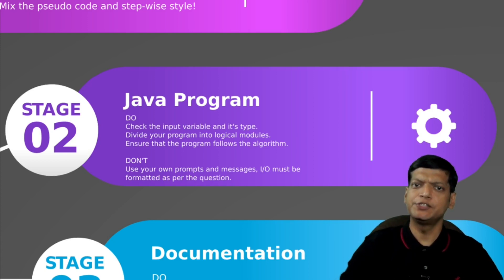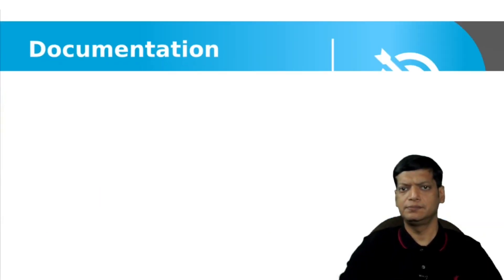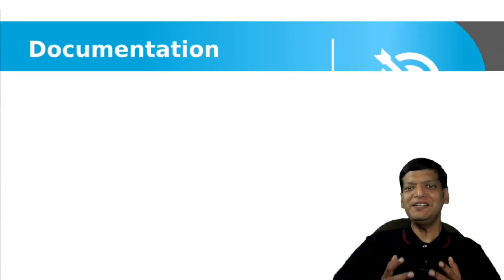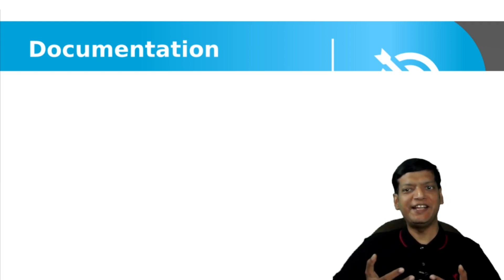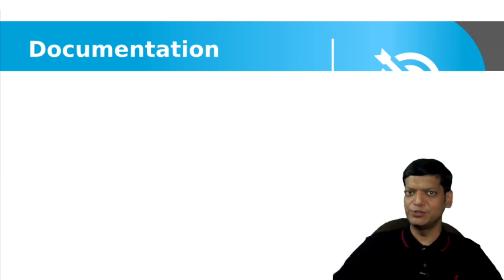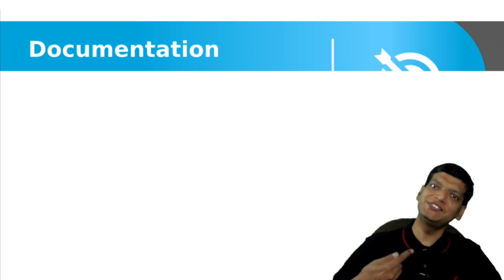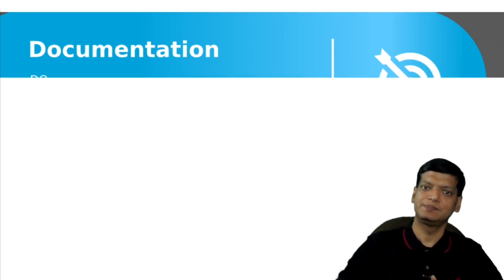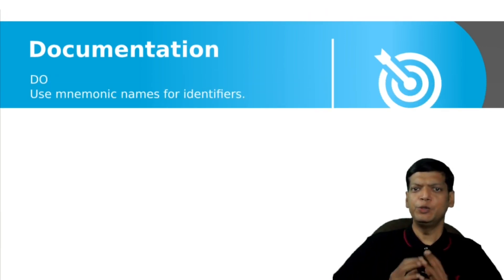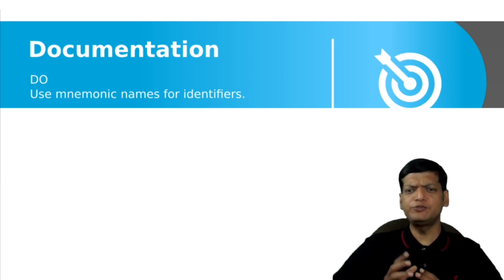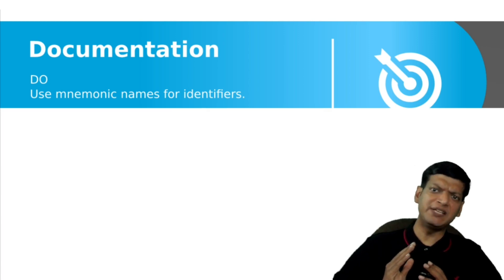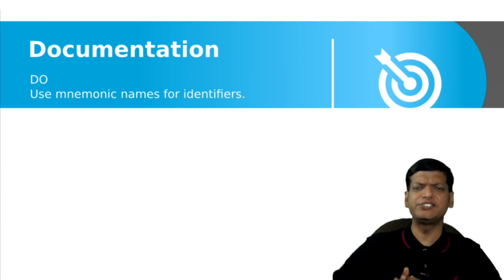Next stage is documentation. The documentation stage is perhaps the most neglected and hated stage among the students. However, it is also the simplest. You are expected to use mnemonic names for identifiers that is short and descriptive names. Like a method should be named is prime instead of test. A counter can be called leap count instead of C.